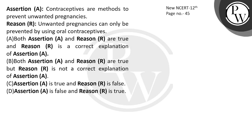Hello, let's read this question. Assertion: contraceptives are methods to prevent unwanted pregnancies. So here this statement is correct — contraceptives can prevent pregnancies.